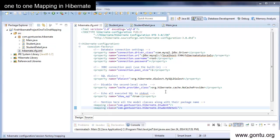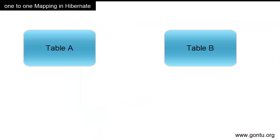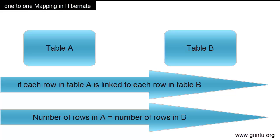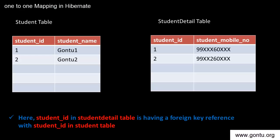Before I go to the demo, the first question is: what is one-to-one mapping or relationship in general, and how is it related to Hibernate? Any two tables in a database, say A and B, are said to have a one-to-one relationship if each row in table A is linked to another row in table B, and the number of rows in table A is equal to the number of rows in table B.